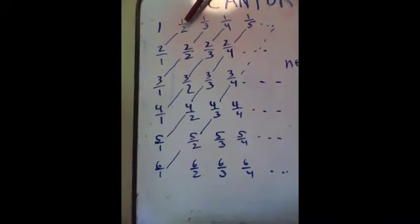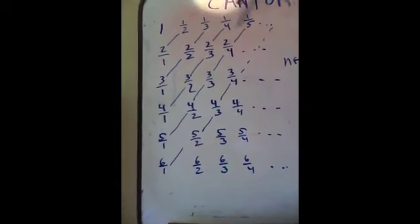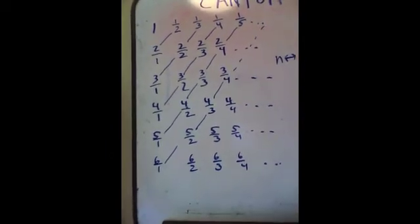we have 1, and then 1 plus 2 is 3, and then 3 plus 3 is 6, and then 6 plus 4 is 10, 15, 21, so forth.